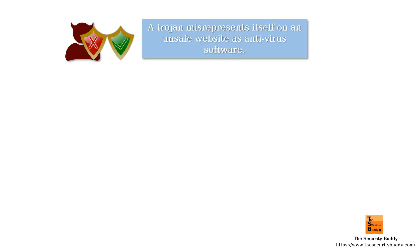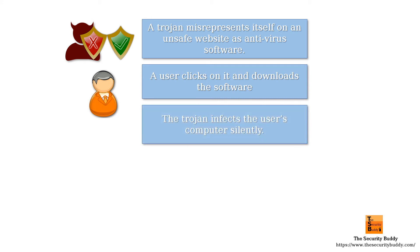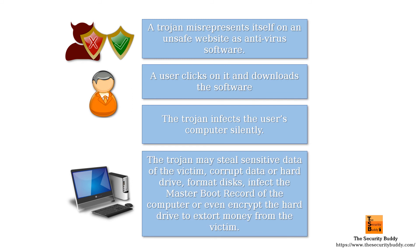For example, a trojan can misrepresent itself on an untrusted website as legitimate software. When a user clicks on it and downloads the software, the trojan may infect the user's computer silently. After that, the trojan may steal sensitive data, corrupt data or the hard drive, format disks, infect the master boot record, or even encrypt the hard drive to extort money from the victim.